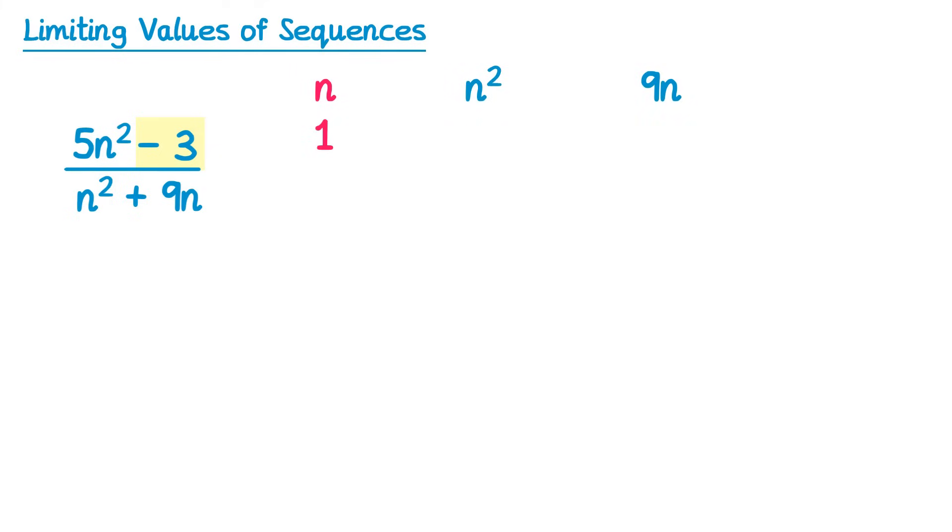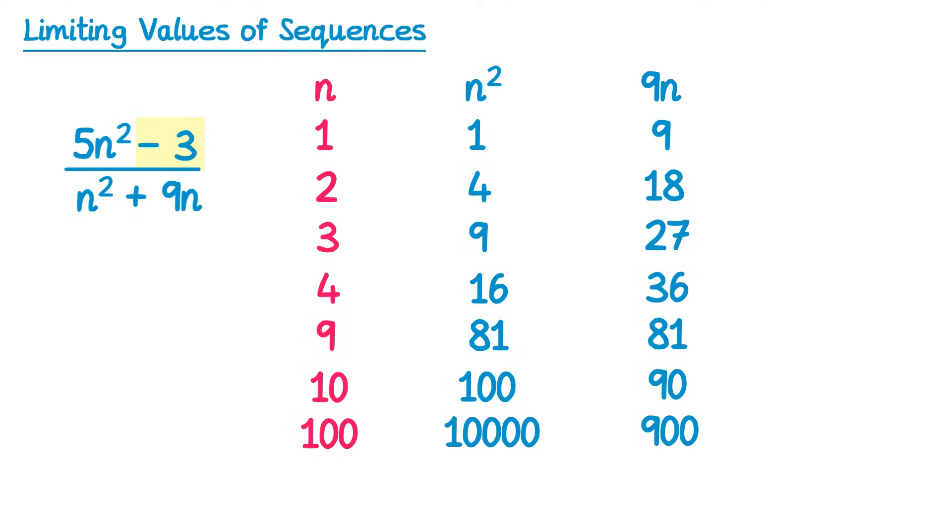So if we start with n equals 1, n squared is 1 and 9n is 9. When n is 2, n squared is 4 and 9n is 18. When it's 3, we get 9 and 27. 4 we get 16 and 36. And if you keep going, eventually you'll get to 9, when n squared is 81, but also 9n is 81. And then if you make n larger and larger, say 10, we get 100 and 90. 100, we get 10,000 and 900. If we did 1,000, we'd get 1,000,000 and 9,000.